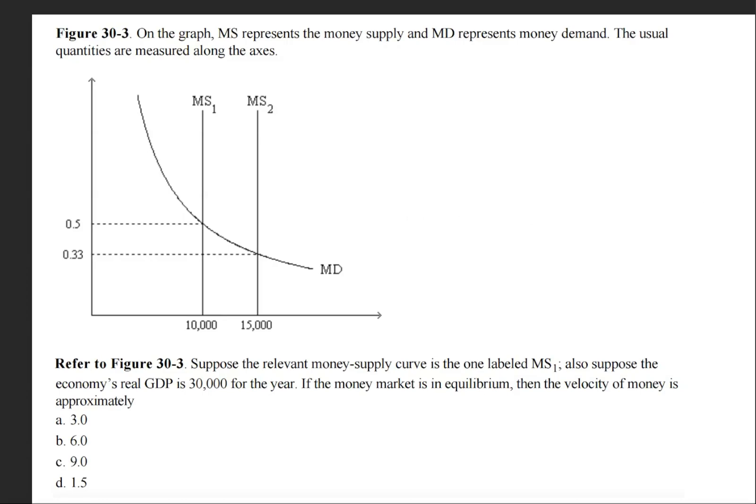The question asks: suppose the relevant money supply curve is the one labeled MS sub one. Also, suppose the economy's real GDP is 30,000 for the year. If the money market is in equilibrium, then the velocity of money is approximately...